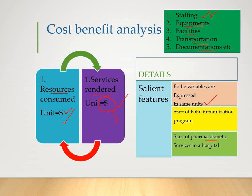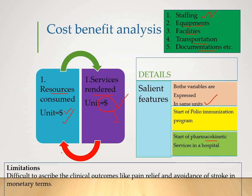This is called cost benefit analysis. The limitation is that it is difficult to ascribe clinical outcomes like pain relief or avoidance of stroke in monetary terms. Economists are at ease understanding cost benefit analysis, while health professionals are skeptical about how a stroke, for example, can be expressed in terms of monetary benefit. I hope now you understand cost benefit analysis. Thank you.